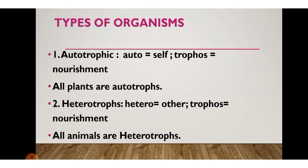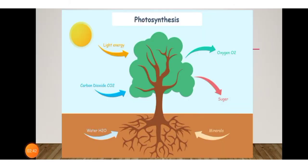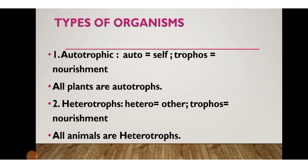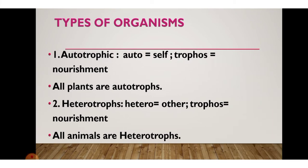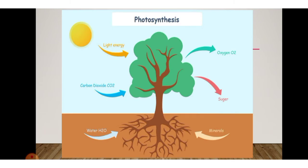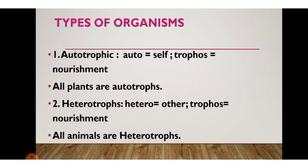While all plants are autotrophs, heterotrophs — 'hetero' meaning other — are organisms that cannot prepare their own food. They depend on other creatures for food. All animals are heterotrophs. To summarize: all plants are autotrophs and all animals are heterotrophs.